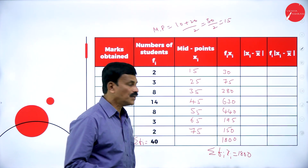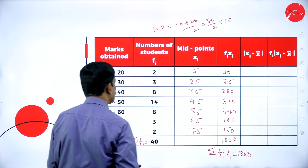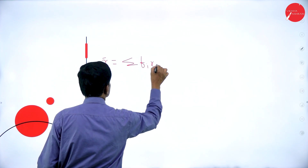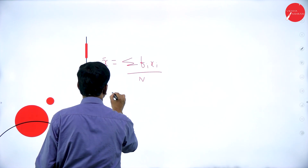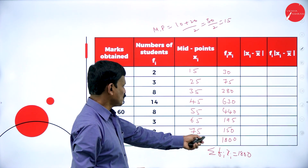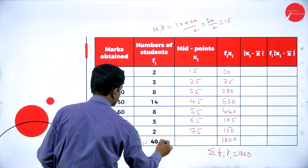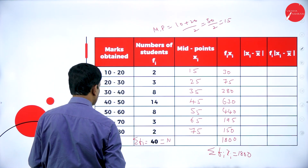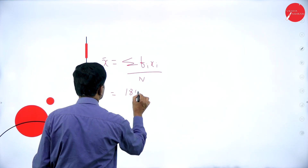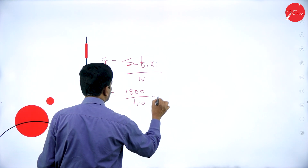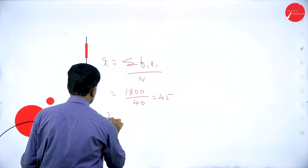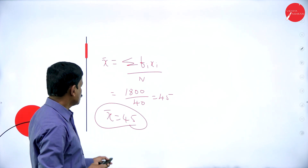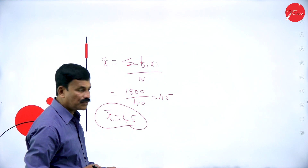Now find x bar. x bar is equal to sigma fi xi divided by N. Sigma fi xi is 1800, and N is sigma fi which is 40. So 1800 divided by 40 equals 45. Therefore x bar is equal to 45, that is the mean is 45.